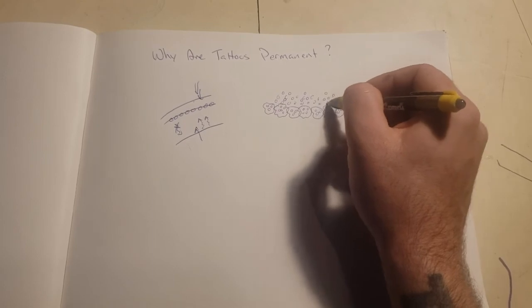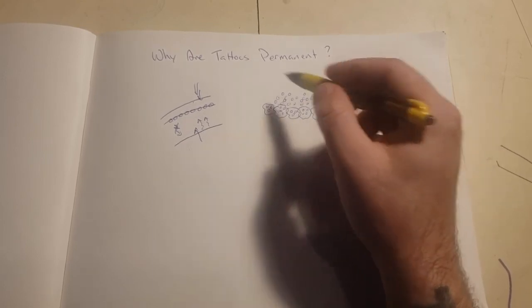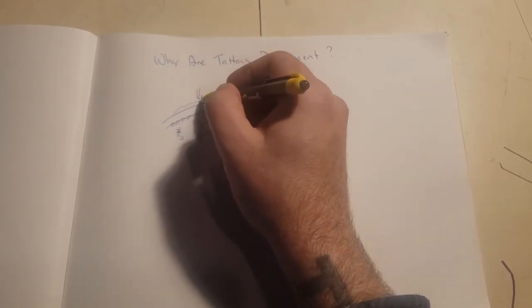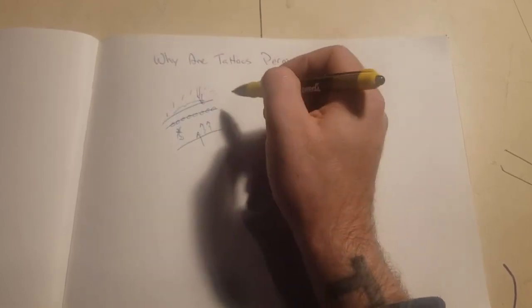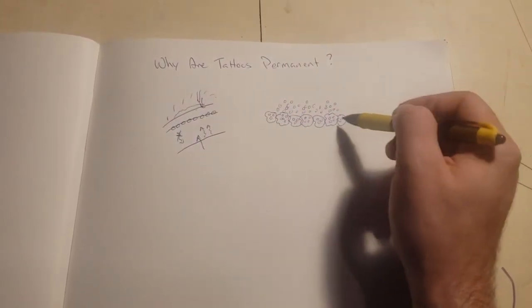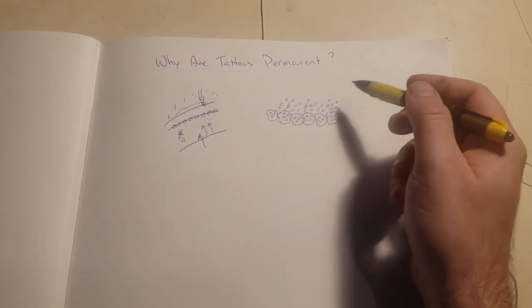You see things like this especially while the tattoo is healing. As it's raised, you get a little bit of a scab or something, or maybe the skin is irritated a little bit and raised. That's because these macrophages are down there doing their job, making that stuff stay permanent.